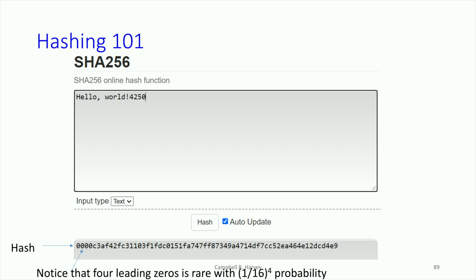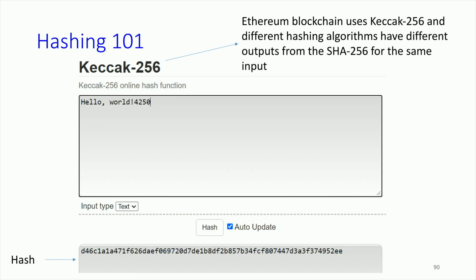SHA-256 is used in Bitcoin; Ethereum uses Keccak-256, which is a different algorithm. When you put the same input — 'Hello World 4250' — into SHA-256 versus Keccak-256, you get completely different hashes. So the Keccak-256 is used in Ethereum and SHA-256 is used in Bitcoin.